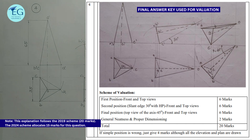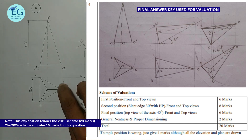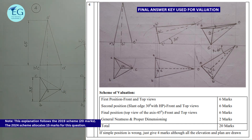Usually, if the resting position is wrong, just give 4 marks, even if all the elevation and plan are otherwise correct. If the resting position is wrong, the edge is wrong, and consequently the points are wrong, just give 4 marks.